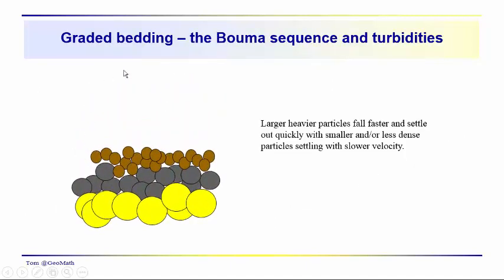The idea of graded bedding is a direct outgrowth of Stokes' law. Larger particles fall more quickly and reach the ocean floor or lake bed first, then particles of intermediate radii, and then the smaller particles settle on top. When you see graded bedding, this is one possible mechanism controlling the distribution of particle sizes — a fining-upward sequence. This is an outgrowth of Stokes' law, and thanks for tuning in.